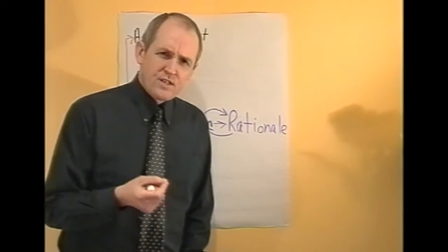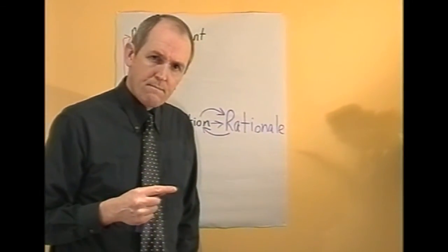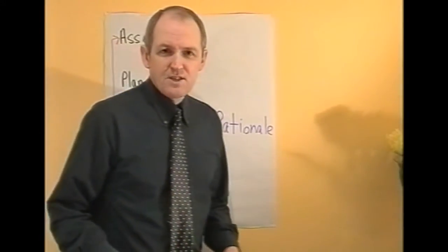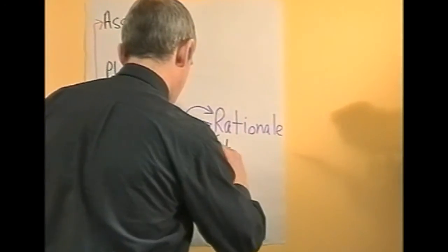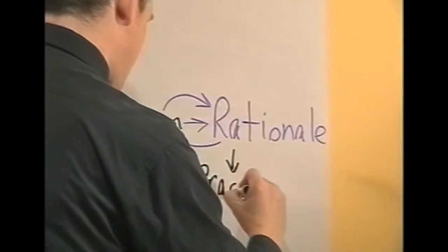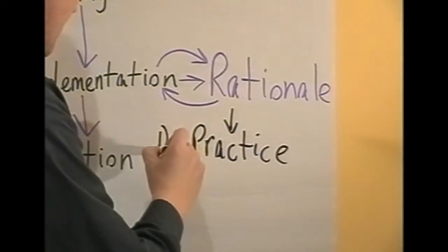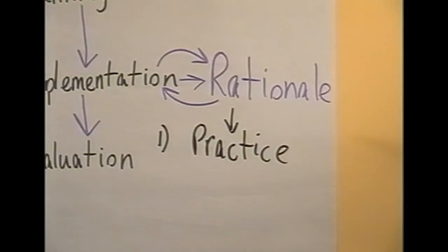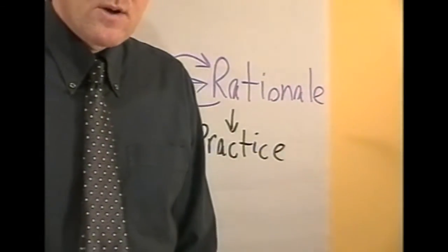The next question is: what do we base our rationale on? Well, traditionally, rationales have just been based on practice — on tradition. That's the first level: we do it this way because we always have done it this way. A tradition or practice-based rationale.